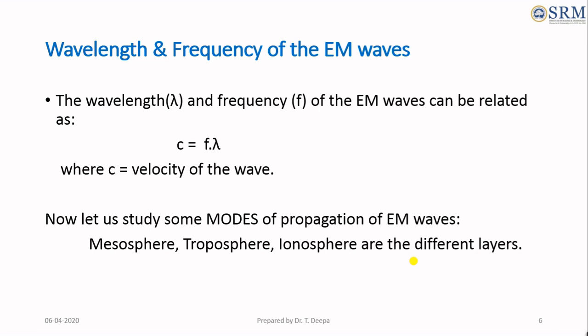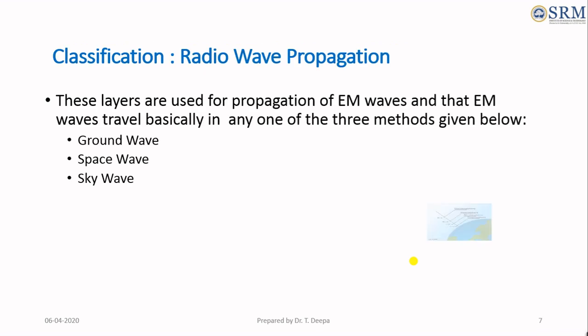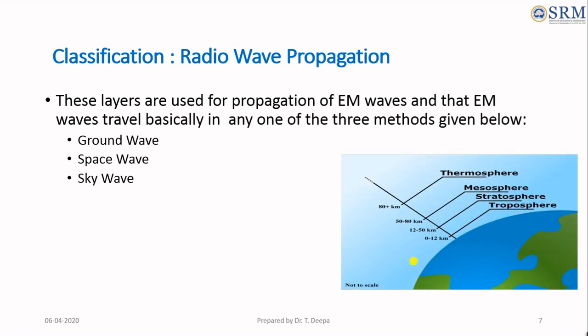Now let us study some modes of propagation of electromagnetic waves. The thermosphere, mesosphere, stratosphere, and troposphere are different layers of the atmosphere. These layers are used for propagation of electromagnetic waves, and these waves travel basically in one of three methods: ground wave propagation, space wave propagation, and sky wave propagation.